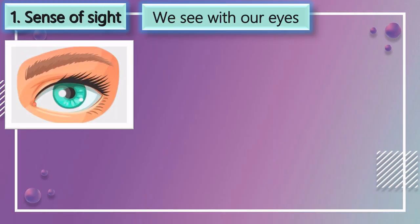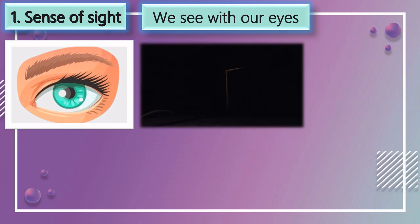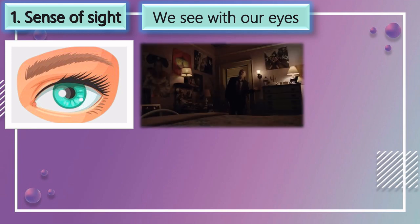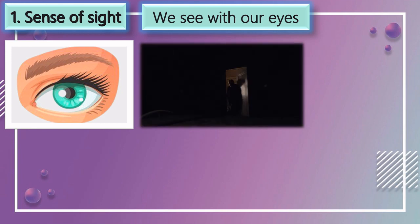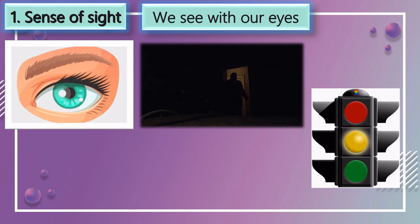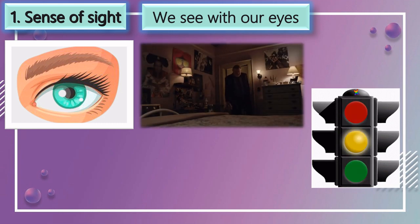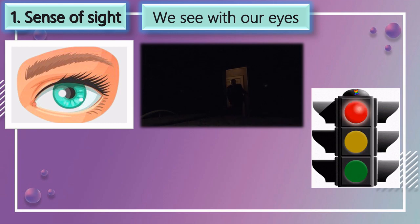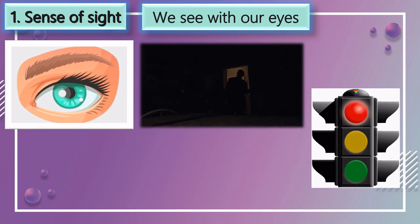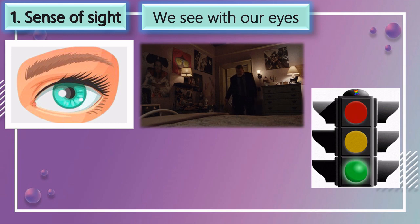Sense of sight. We see with our eyes. For example, when there is darkness in our room, we switch on the light. Our second example is traffic signal — when we see a red light on a traffic signal, we stop the car, and when we see a green light, we go.